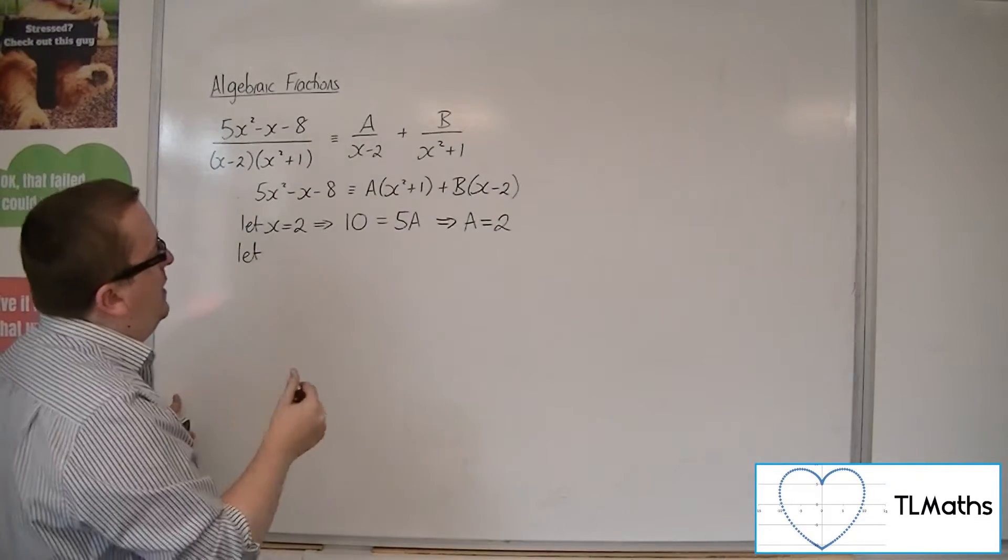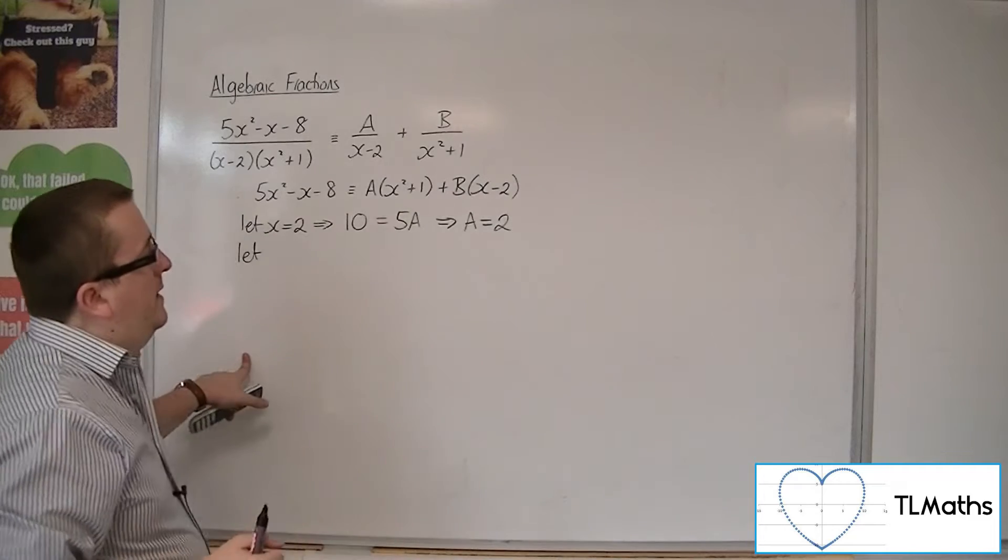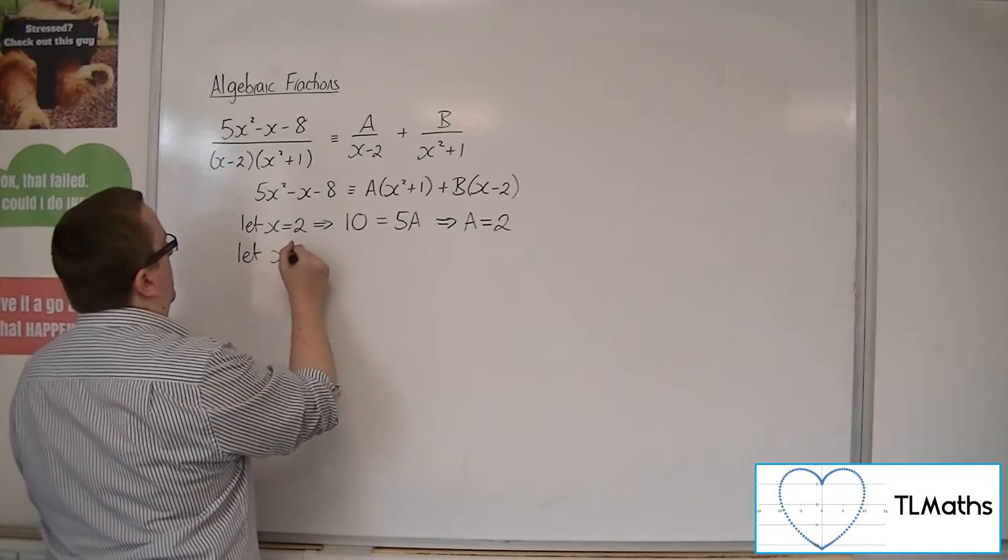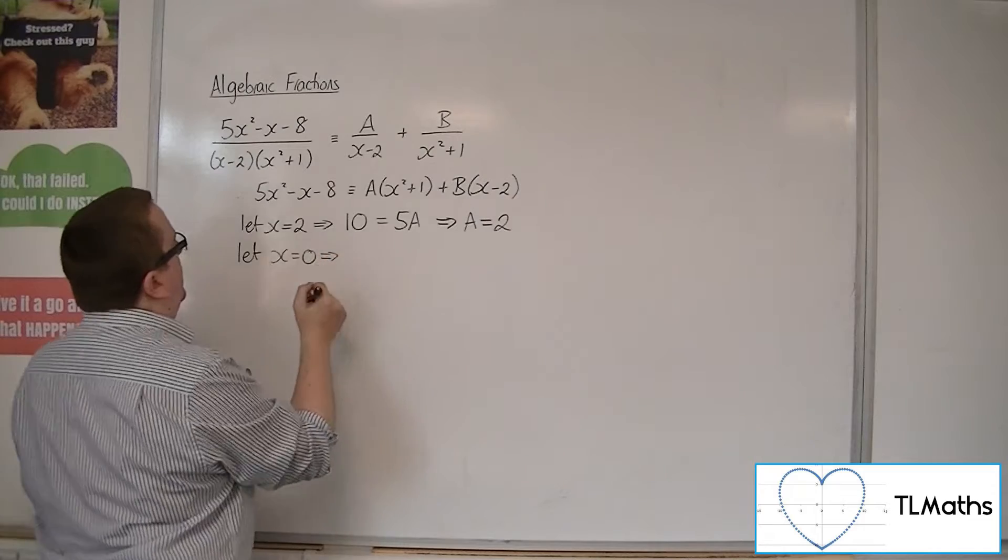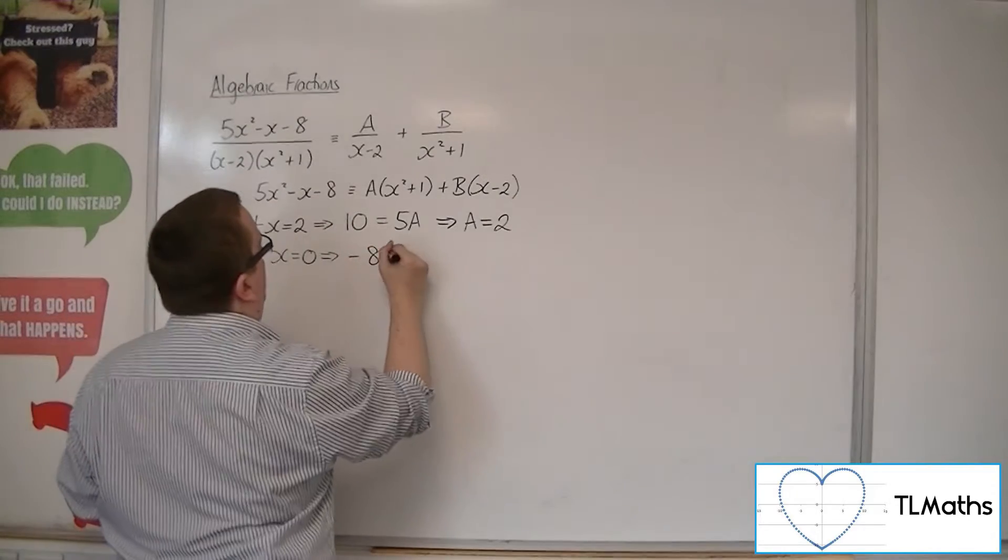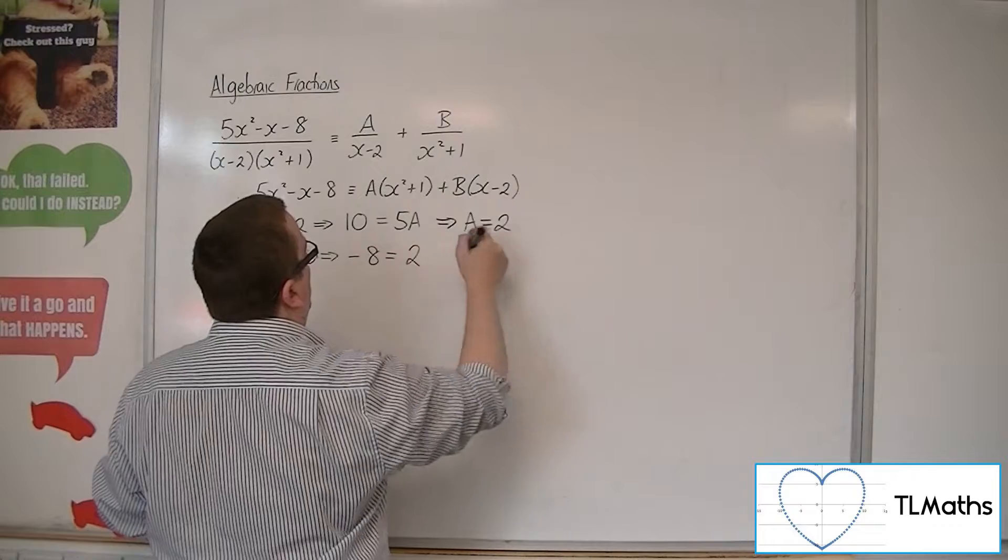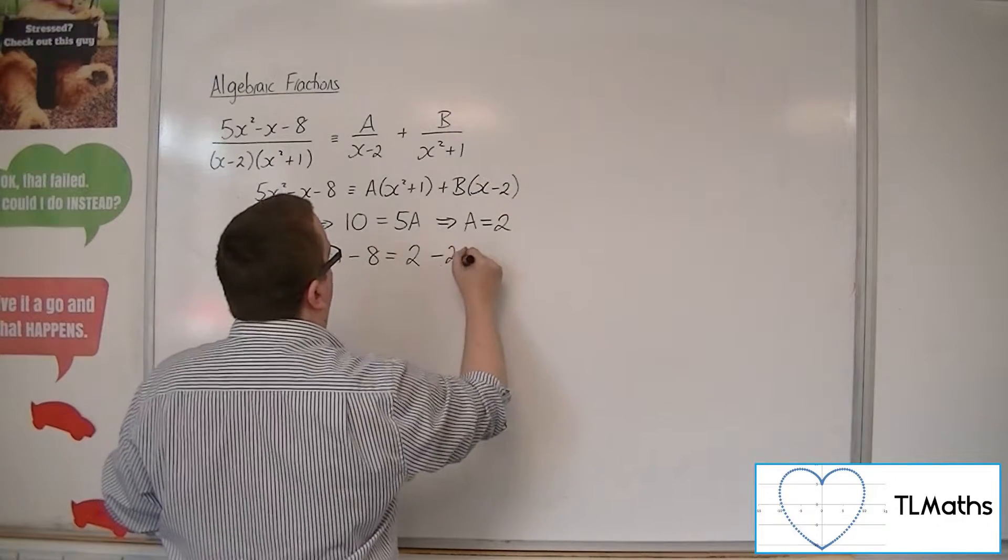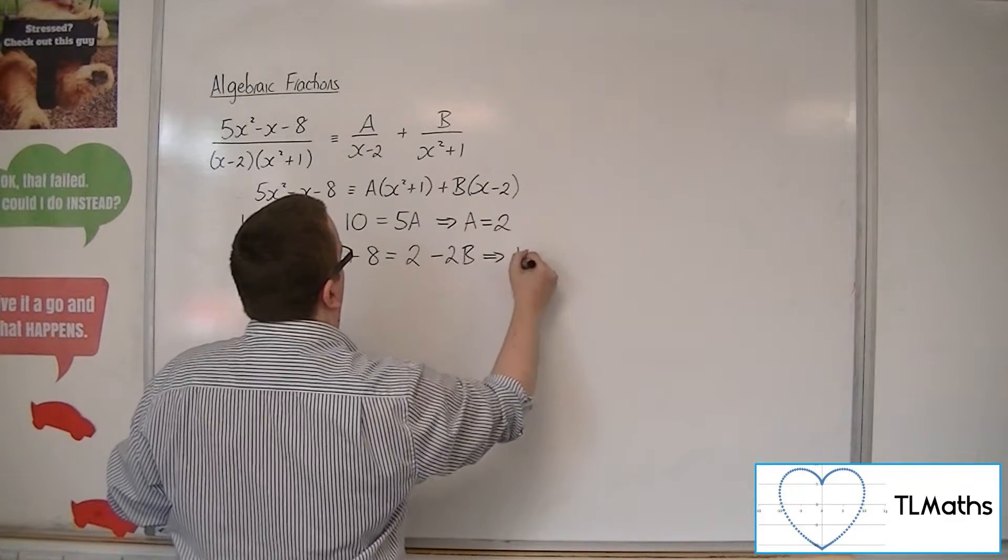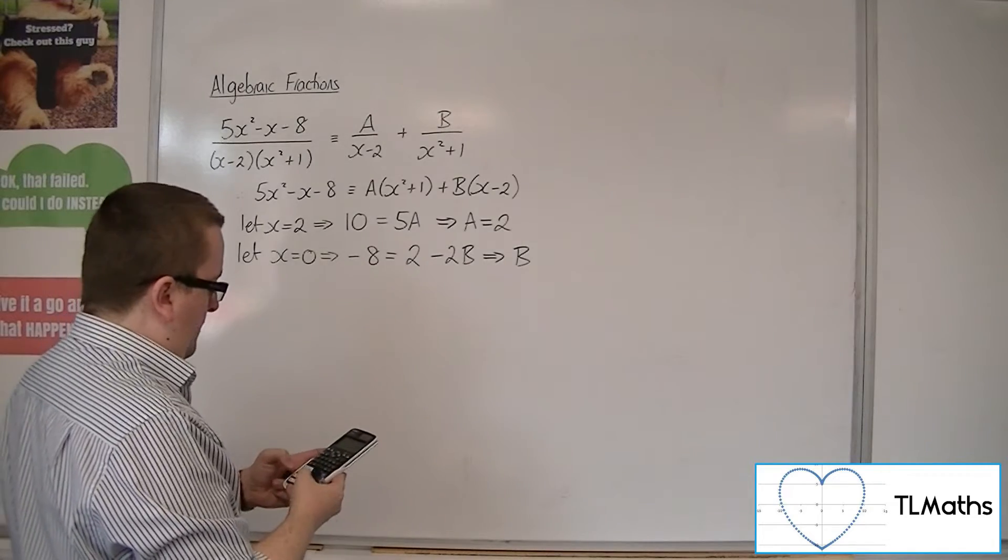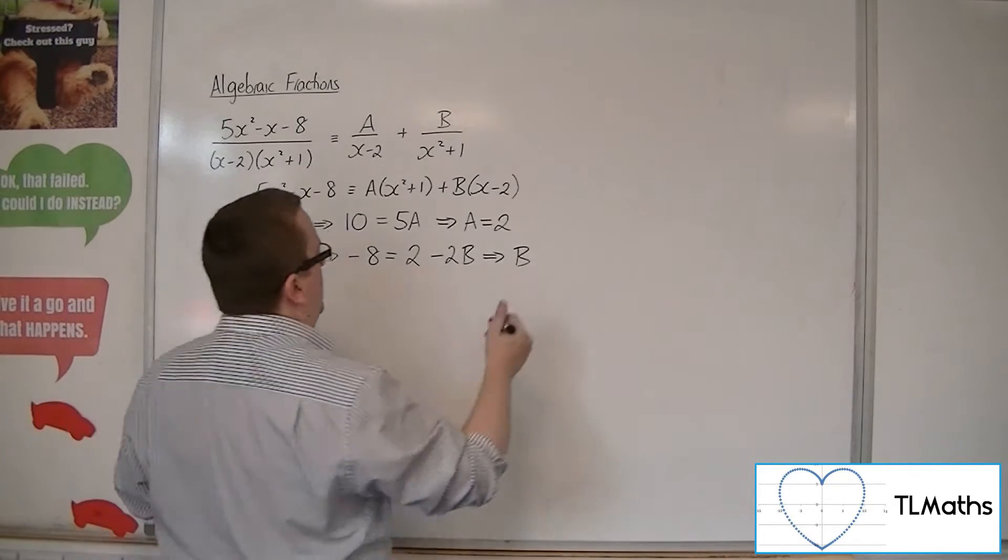And I can't substitute in a number to knock out that bracket, but I could substitute in x is 0. Because then I've got minus 8 on the left-hand side, I've got 1 lot of A, which I know is 2, and then I've got minus 2B. So if I get the minus 8, I take away 2, and then I divide by minus 2, I get 5.